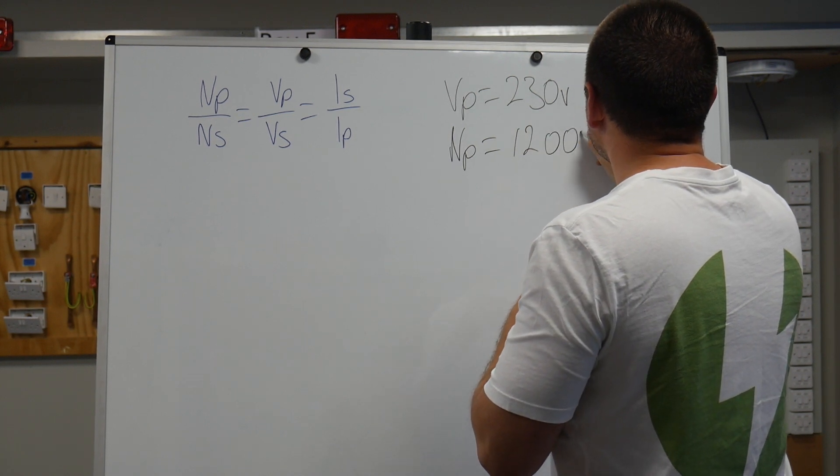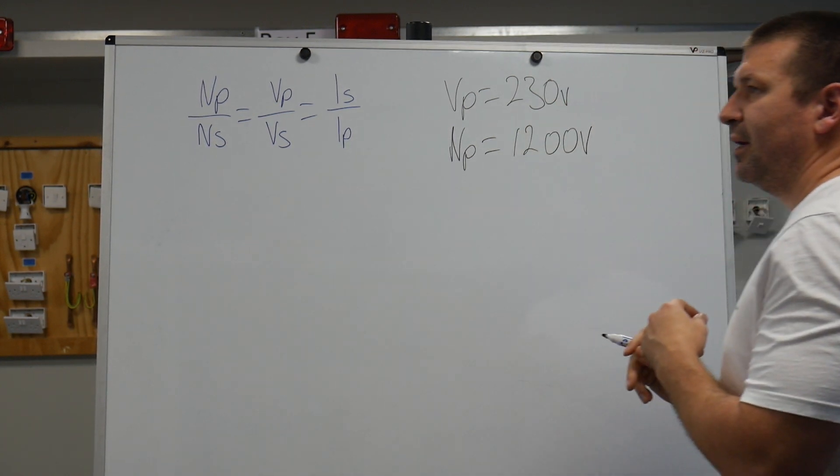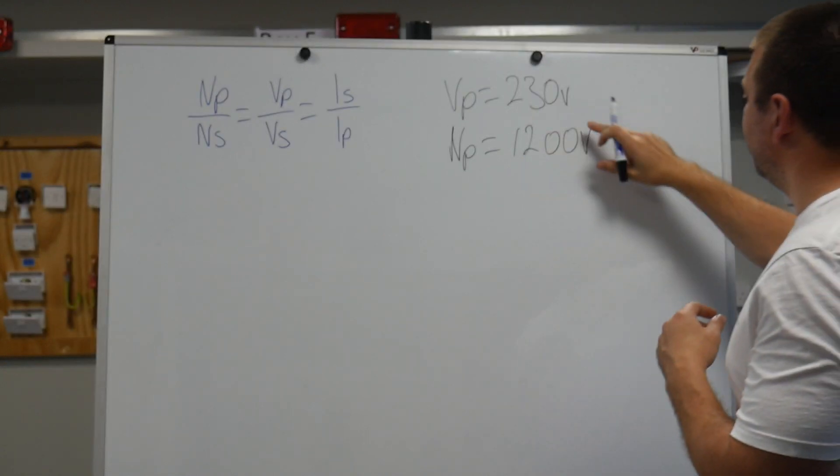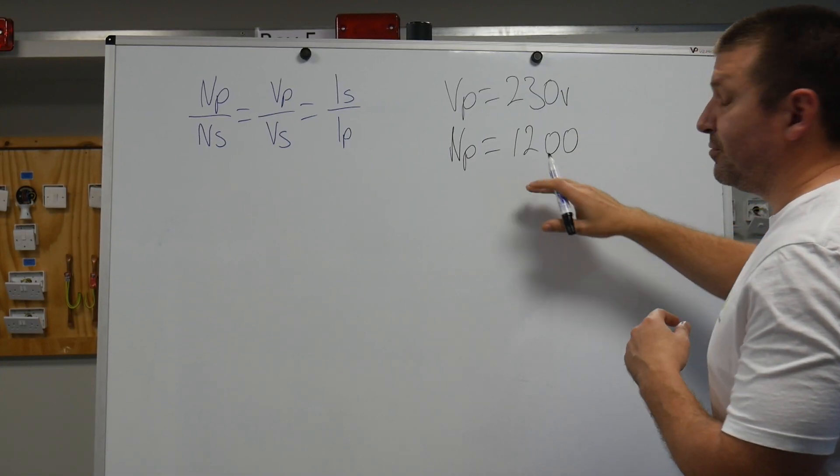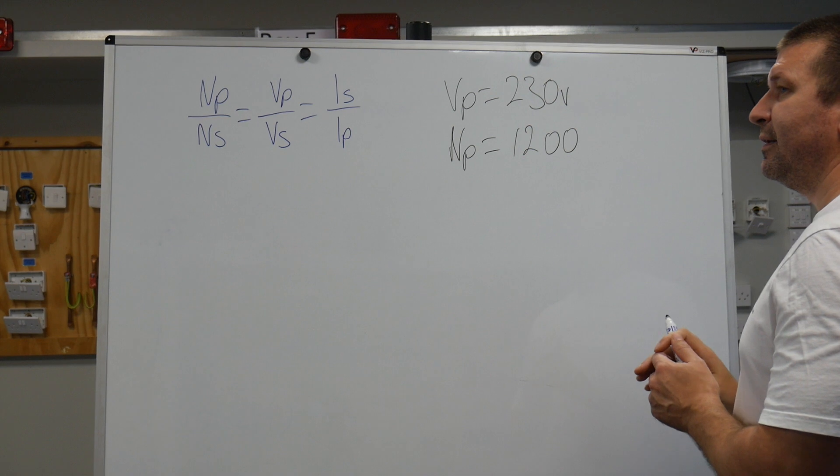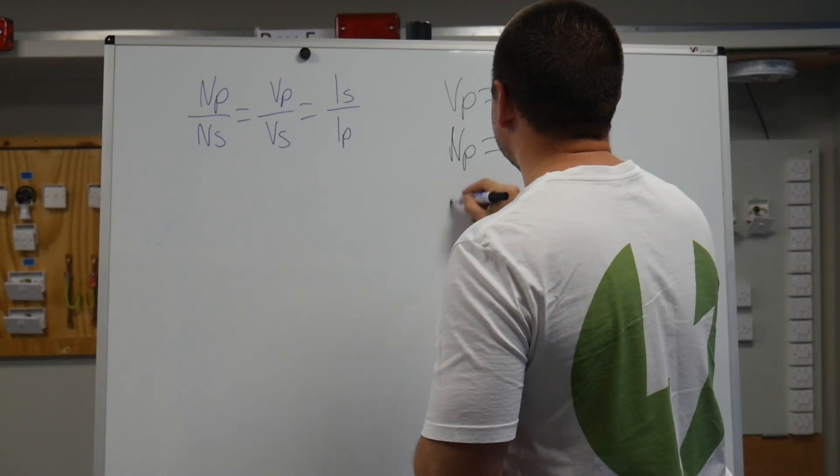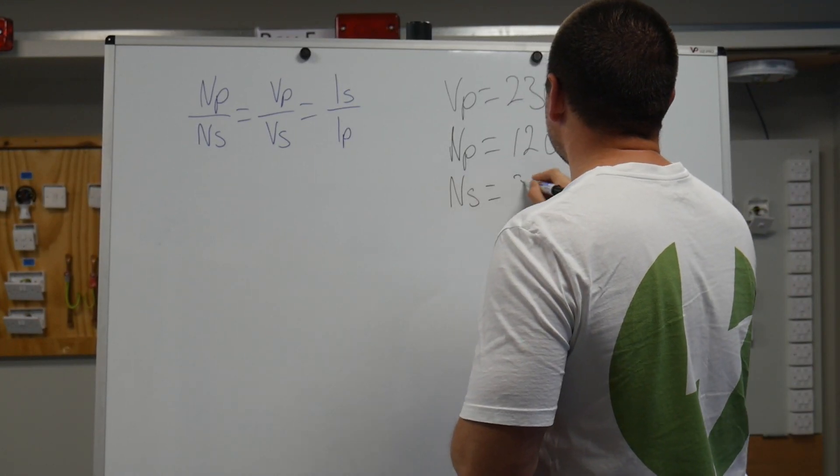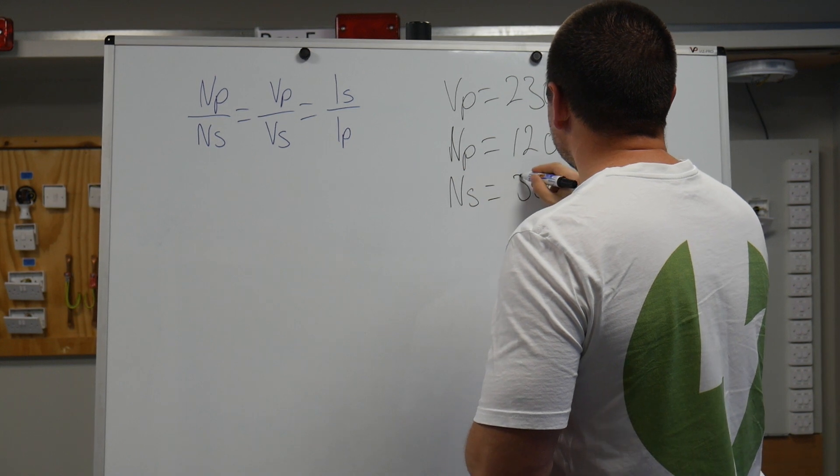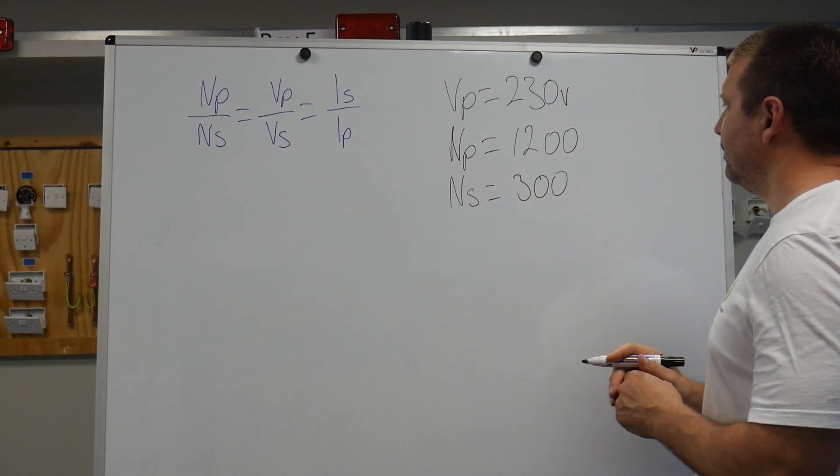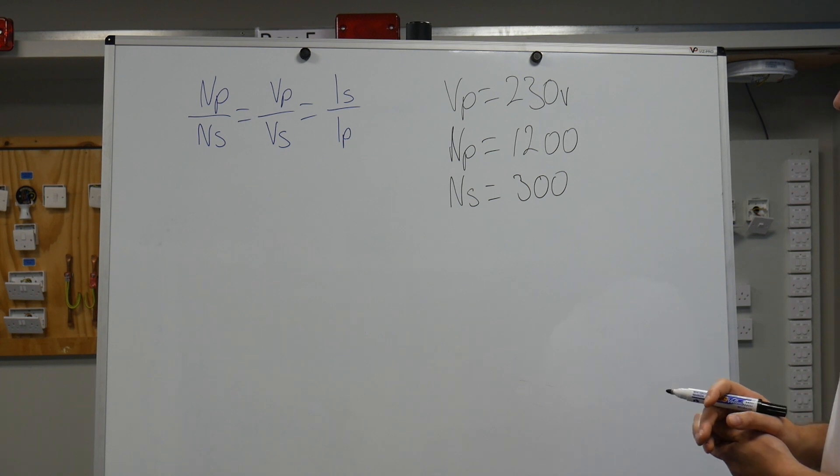V, sorry, 1,200 turns. And then we'll do secondary, number of turns on the secondary, 300. Nice, simple, simple values.